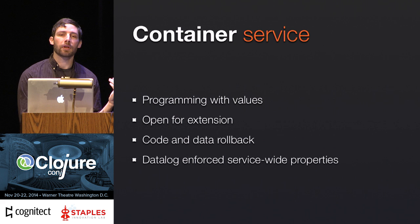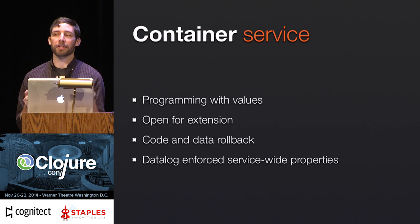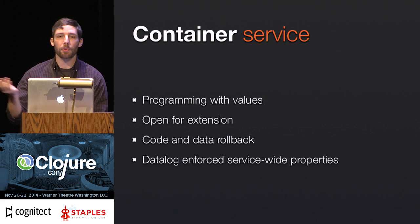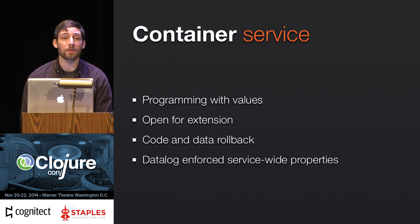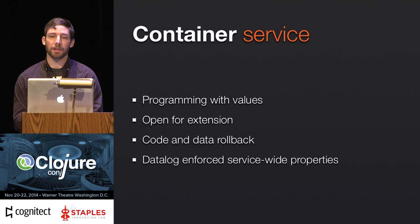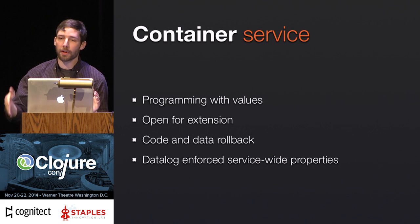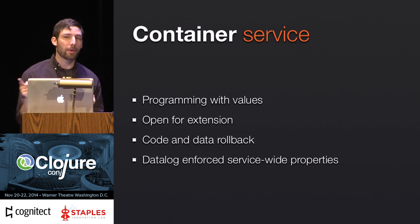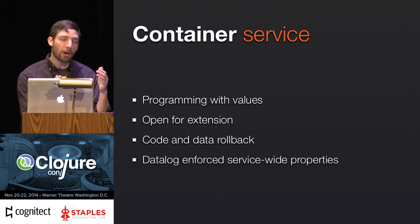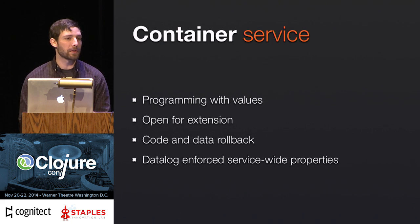When you capture the service definition as data, a lot of cool benefits fall out of that. It can go anywhere data can go: stored in a file, read from a file, sent over the wire, stored in a cache, stored in a CDN, stored in a database. And let's talk about that last one. Vase already sits on top of Datomic, and we store all of the service descriptions inside of Datomic. As live upserts are happening we're storing that new version inside of Datomic. That means if you look at the database as of some point in time, you see all of the services that existed at that point in time — because the services are just data, alongside all of the other application data.